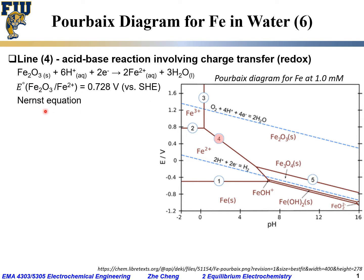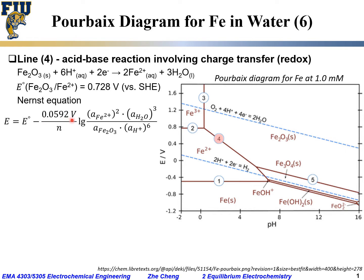The Nernst equation for the electrode potential would be: standard electrode potential minus, at 25°C, 0.0592 V divided by n, times the log of the activity of Fe²⁺ raised to the power of 2, times the activity of water raised to the power of 3, divided by the activity of Fe₂O₃ times the activity of proton raised to the power of 6. This gives us the Nernst equation.